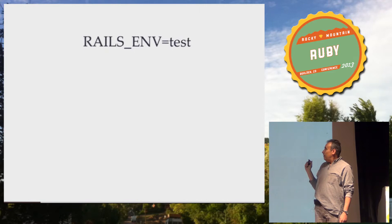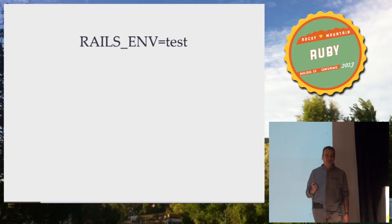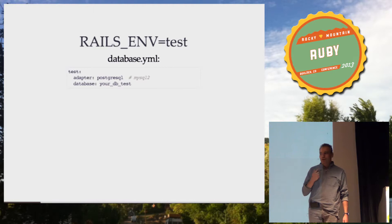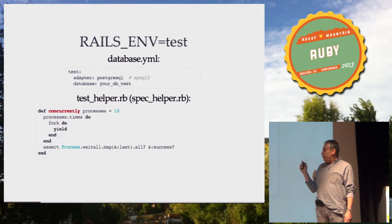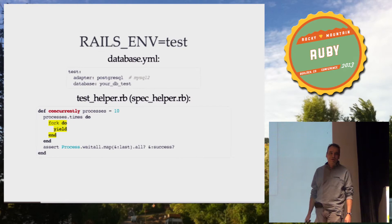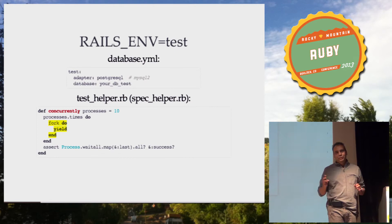Before we start, we want to establish some toolbox to help us test for concurrency issues. We don't need to do a lot. First, we want to point our test environment to a real database — apologies to anybody who thinks SQLite is a real database. We need a tiny helper method available to all your tests that takes a block, forks several processes to exercise this code, and simulates the multiprocess environment. At the end, we make sure all processes successfully exit.